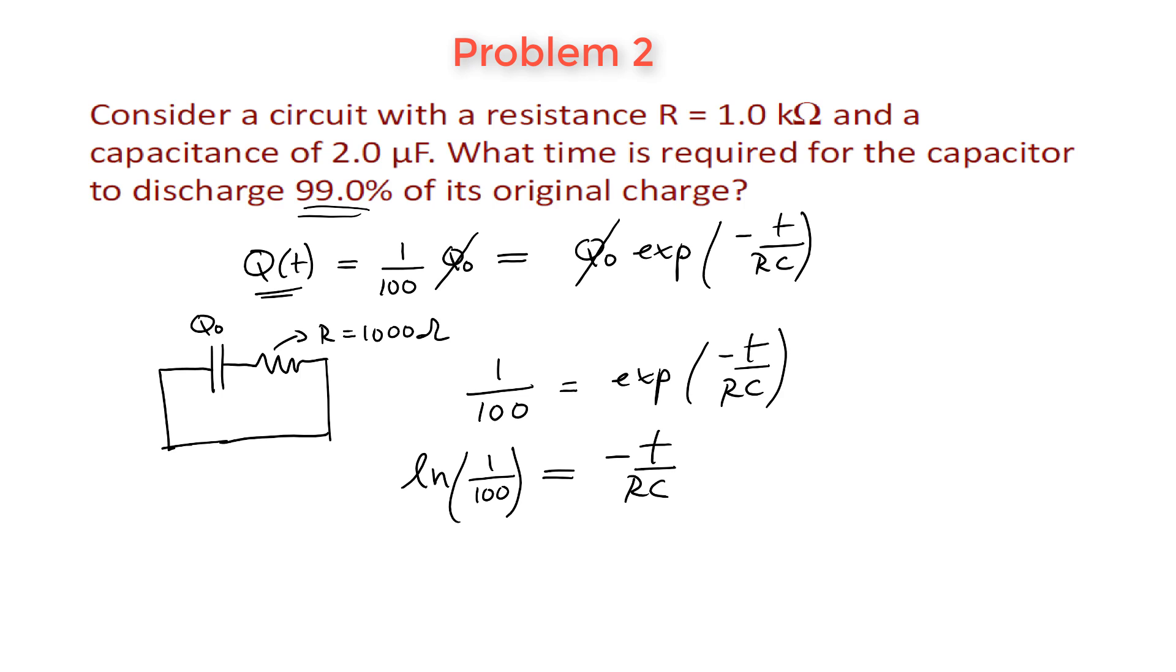So at the end, all we're left with is that our time is minus the time constant RC times the natural log of 1 over 100. We can substitute in all our values now. We have minus. The resistance was 1,000. We had 2 microfarad for the capacitance. And now we have the natural log of 1 over 100. When you substitute everything in the calculator and take your time, you get 9.2 times 10 to the minus 3 seconds, which simply means 9.2 milliseconds.